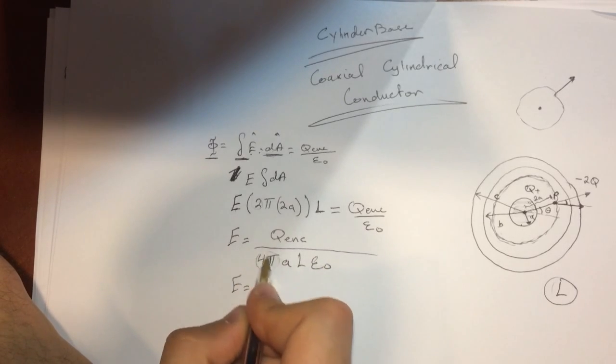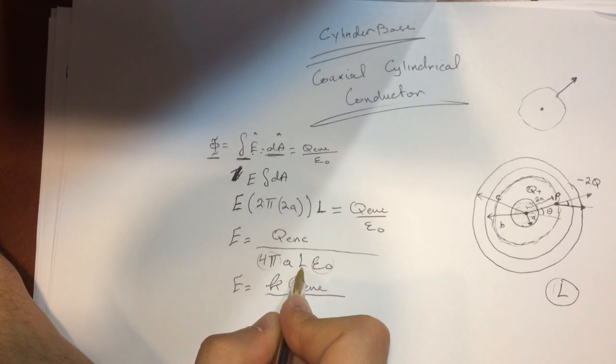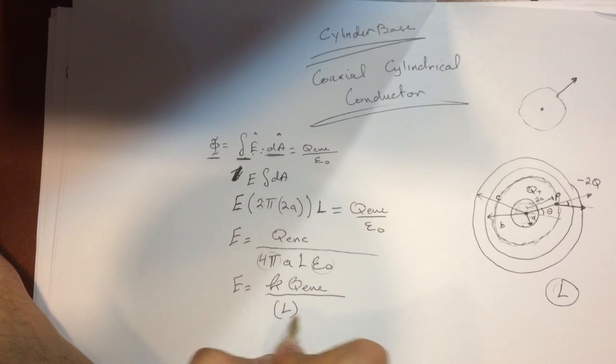And also we can write this, because these guys are just K, so we can write as K, Q enclosed, divided by L times A.